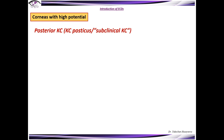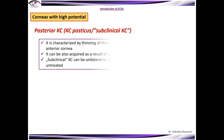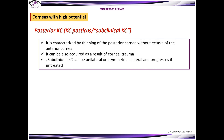Corneas with high potential include posterior keratoconus, keratoconus posticus, or subclinical keratoconus. These are characterized by thinning of the posterior cornea without ectasia of the anterior cornea. It can also be acquired as a result of corneal trauma, and subclinical keratoconus can be unilateral or asymmetrical bilateral, and progresses if untreated.